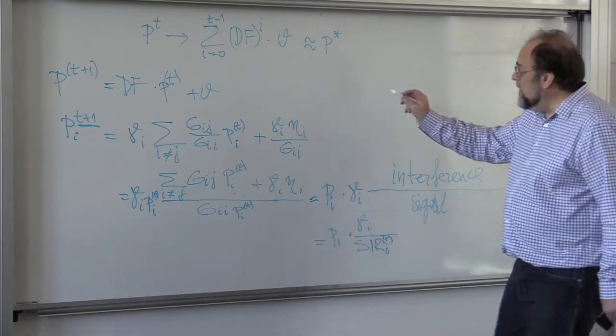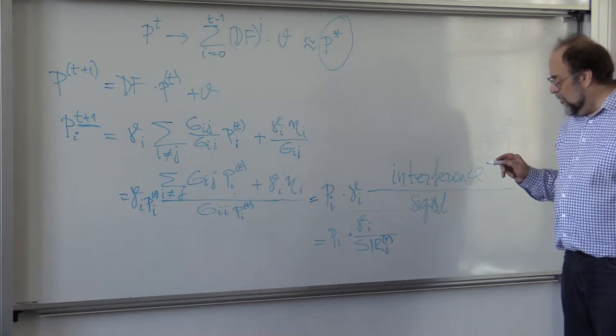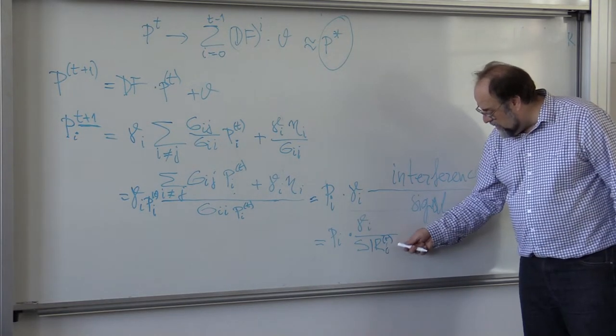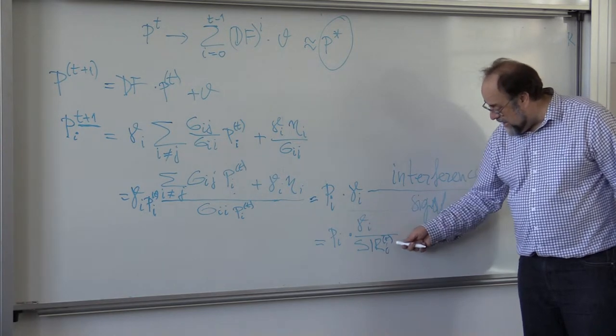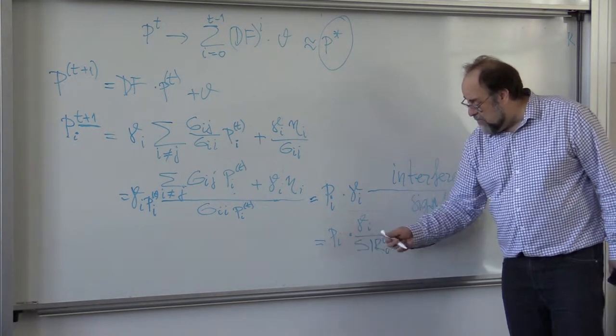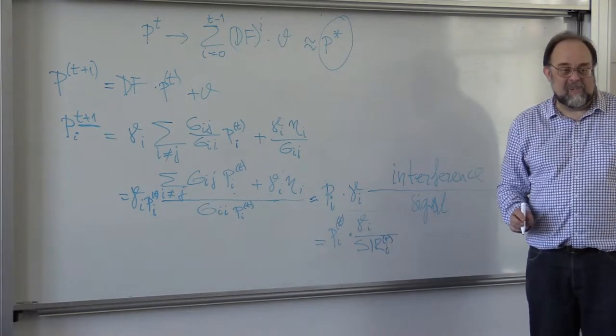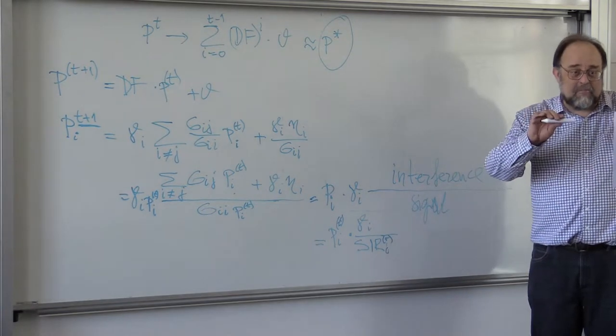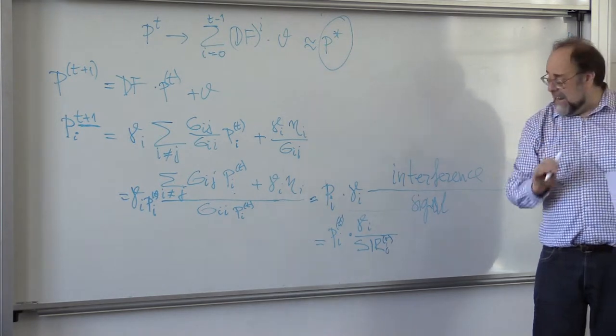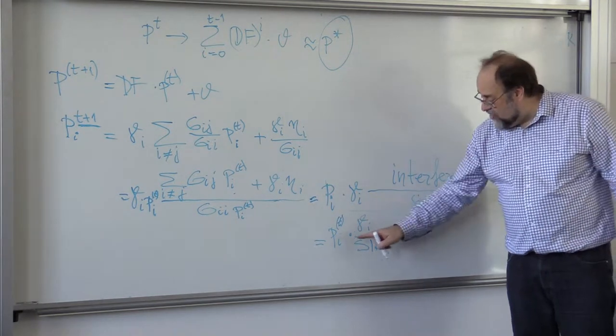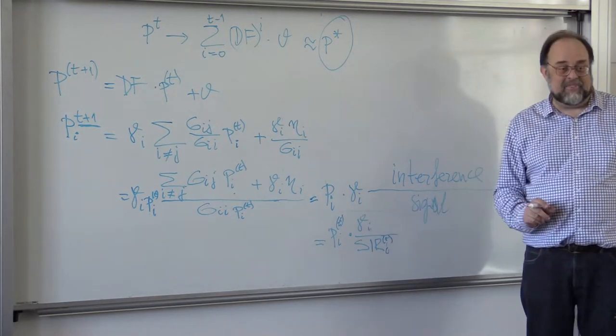So, to find the global optimum P star, all I have to do is measure my signal to interference ratio, divide the target by this, and multiply my previous time at instant T power by this factor, right? So, I just compare how I am doing, comparing to my target, and I adjust power.